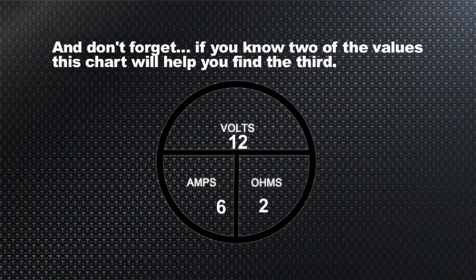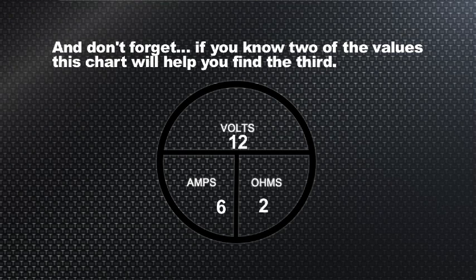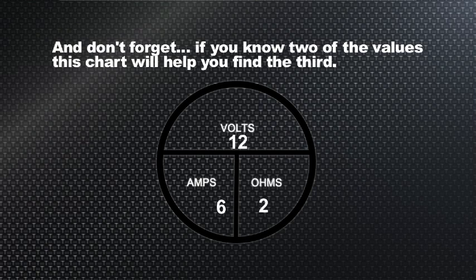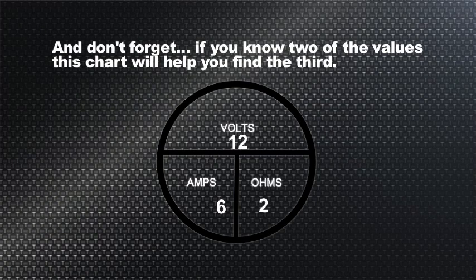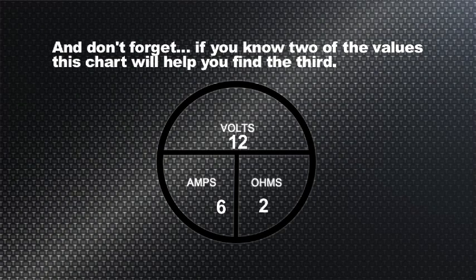And of course, we know it's going to be 12 volts if we have 6 ohms of resistance and 2 amps of current in the circuit.